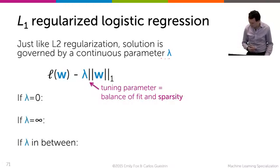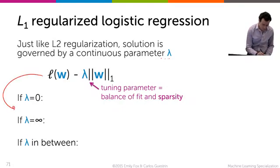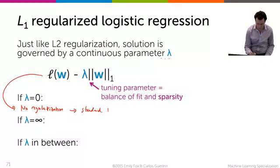When lambda equals zero, we have no regularization, which leads us to the standard MLE solution, just like we had in the case of L2 regularization.